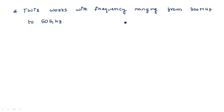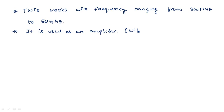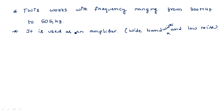The wide bandwidth and low noise characteristics make the TWT ideal for use as an amplifier in microwave equipment. It is an ideal amplifier that works with wide bandwidth — meaning any frequencies ranging from 300 megahertz to 50 gigahertz are allowed to pass through and be amplified — as well as low noise, meaning the amplifier works under very low noise conditions.